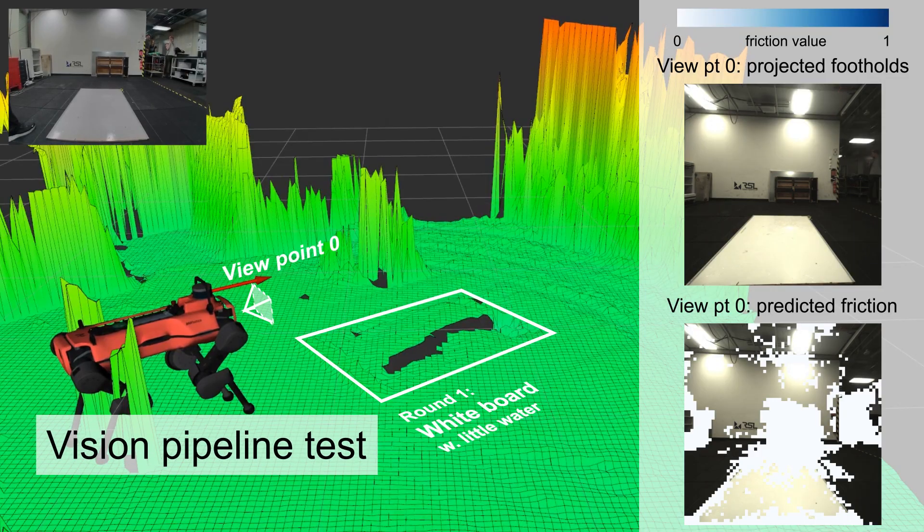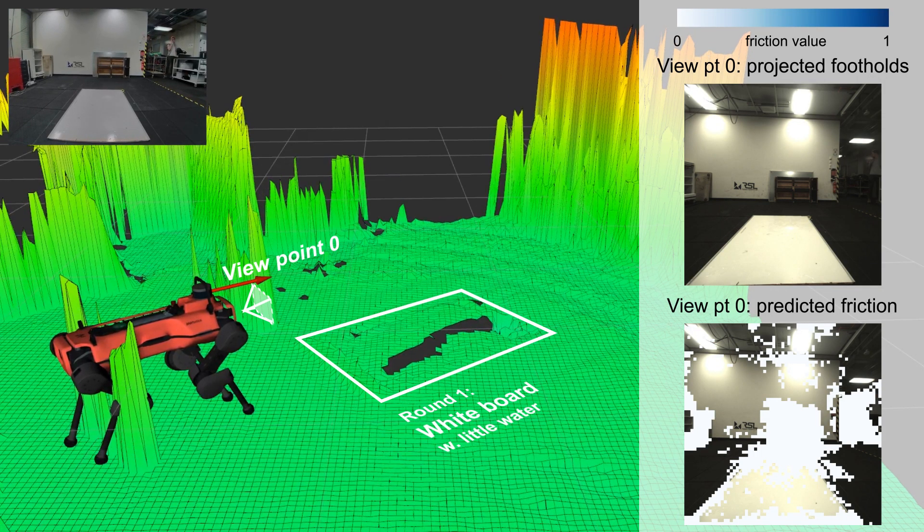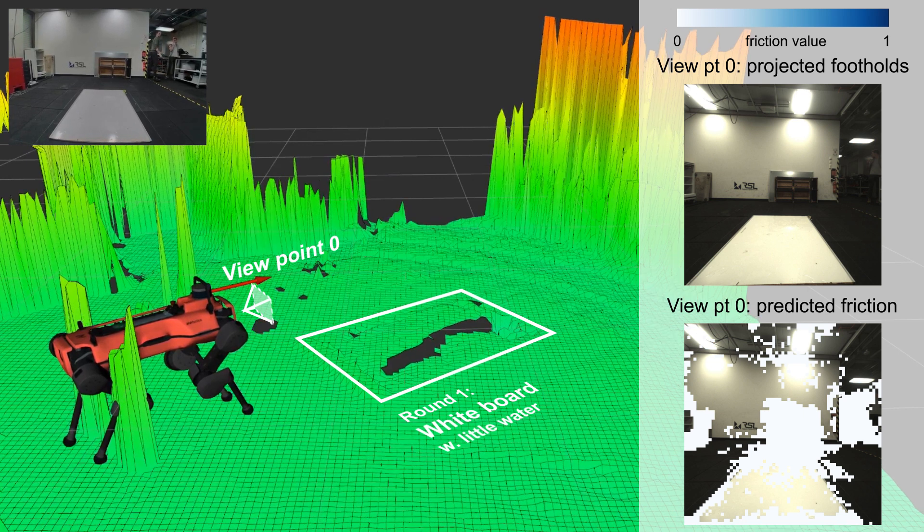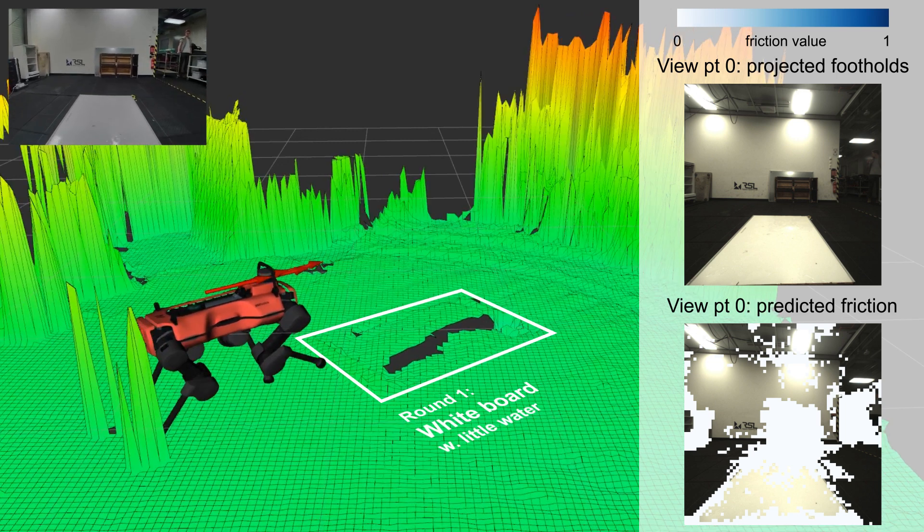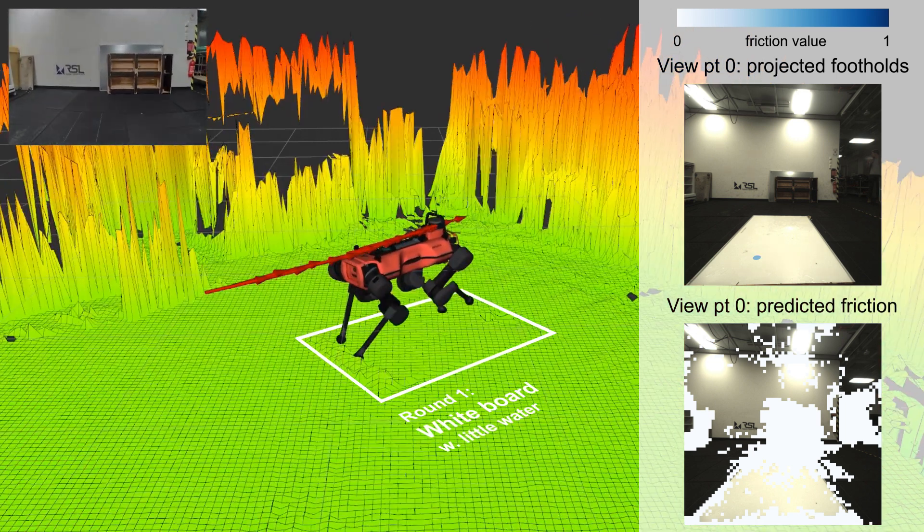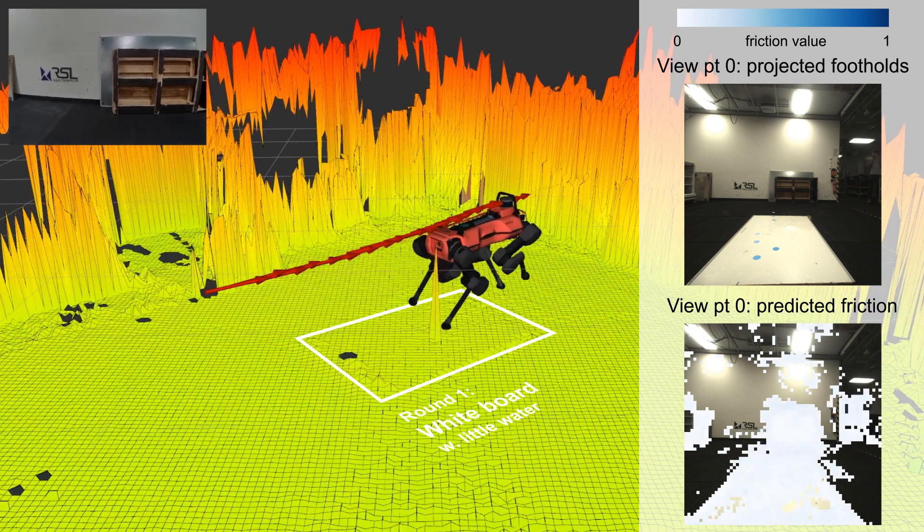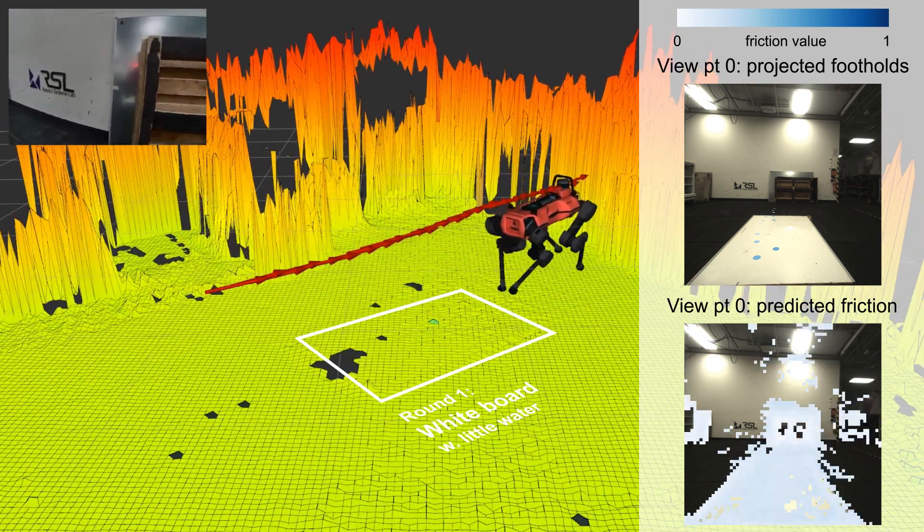We then test the online vision pipeline in a controlled lab setting. The robot walks across the white board for two rounds. In round one, there is little water on the white board. When it transitions from the high friction ground to the white board area, only limited slips occur, so the predicted friction value of the white board does not differ much from the ground.